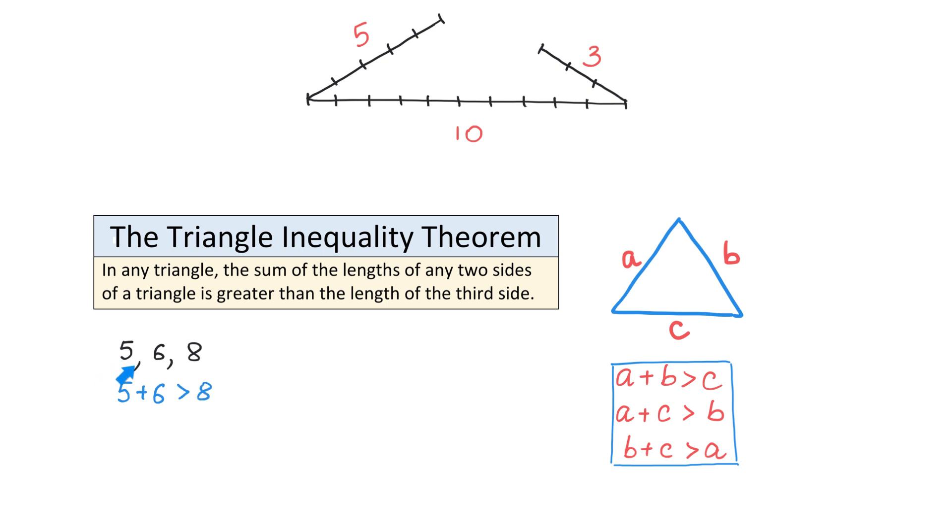So, the sum of these two sides is greater than the third side. Now, let's add 5 and 8. 5 plus 8 is 13, and 13 is greater than 6. And at last, we have to check if 6 plus 8 is greater than 5. 6 plus 8 is 14, and 14 is definitely greater than 5.